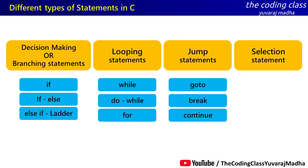Break is a jump statement that stops further execution of the program at that point. Continue is another jump statement used mostly in looping statements — it skips the current iteration and continues program execution from the next iteration.